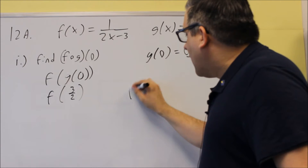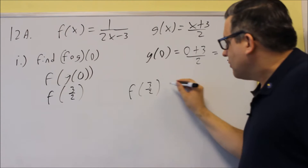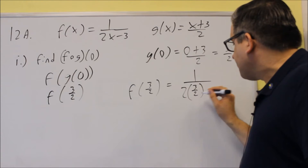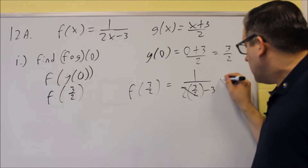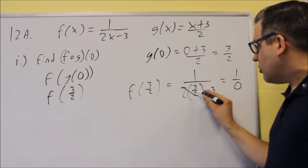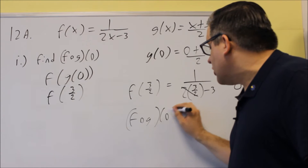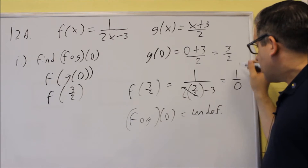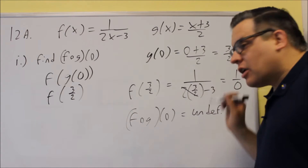So let's do that. If we want to find f of 3 halves, that means we're going to put 3 halves into the f function in place of x. So instead of x there, we're going to put in 3 halves. What happens is the 2s are going to cancel out, and you end up getting 1 over 0. Because that cancels and you get 3 minus 3, we have 1 over 0, so f of g of 0 is undefined — undefined because we end up with something you can't do.